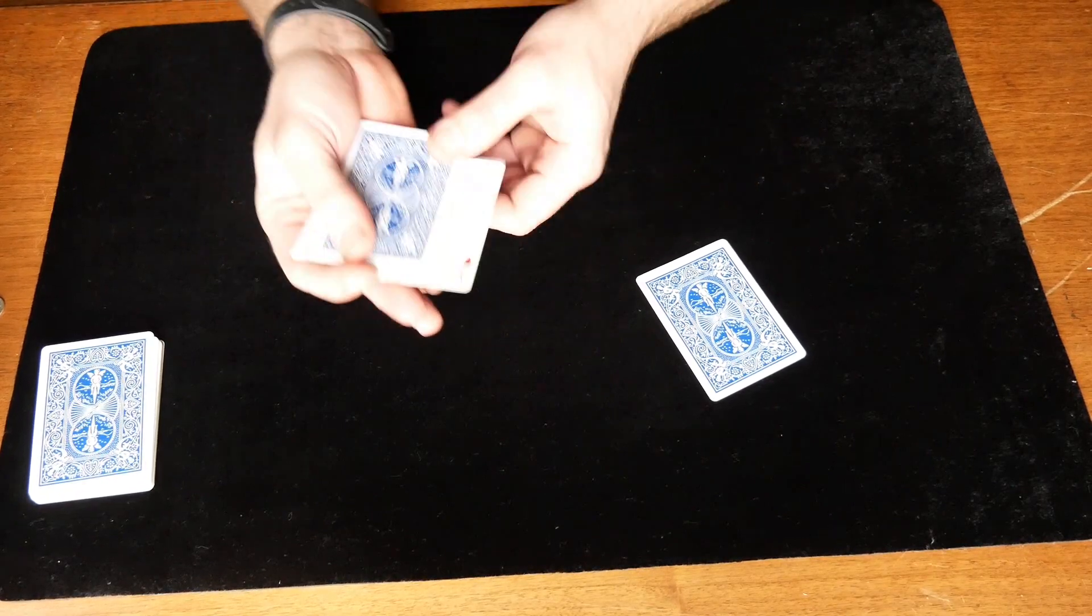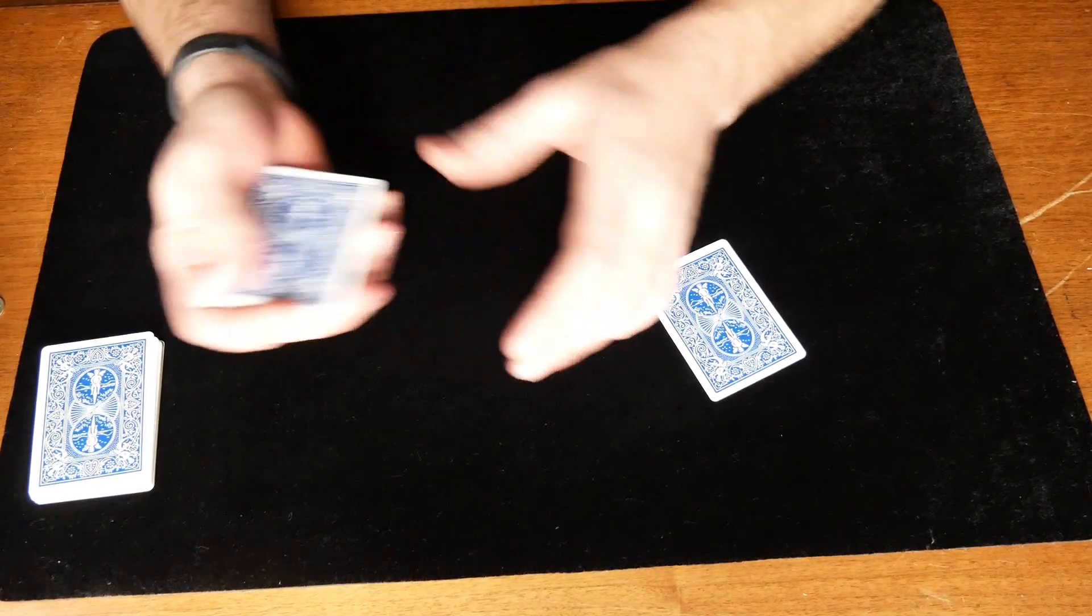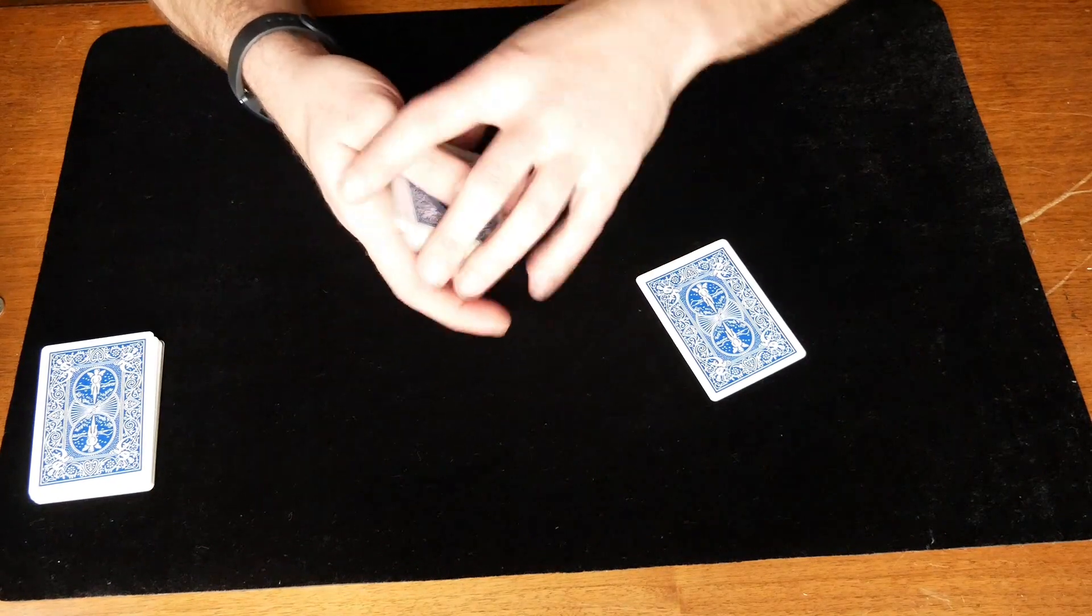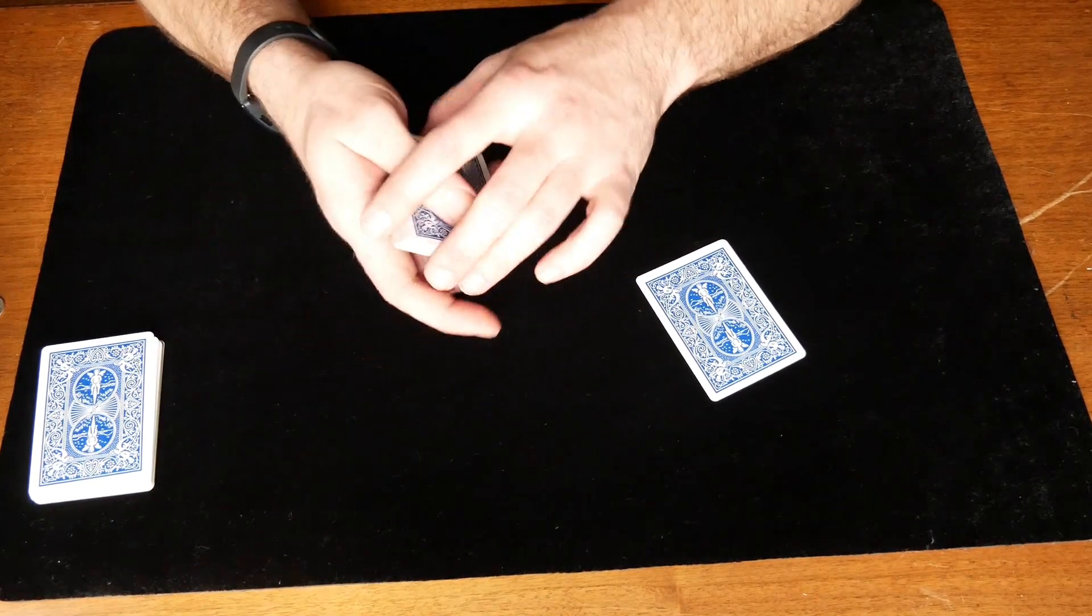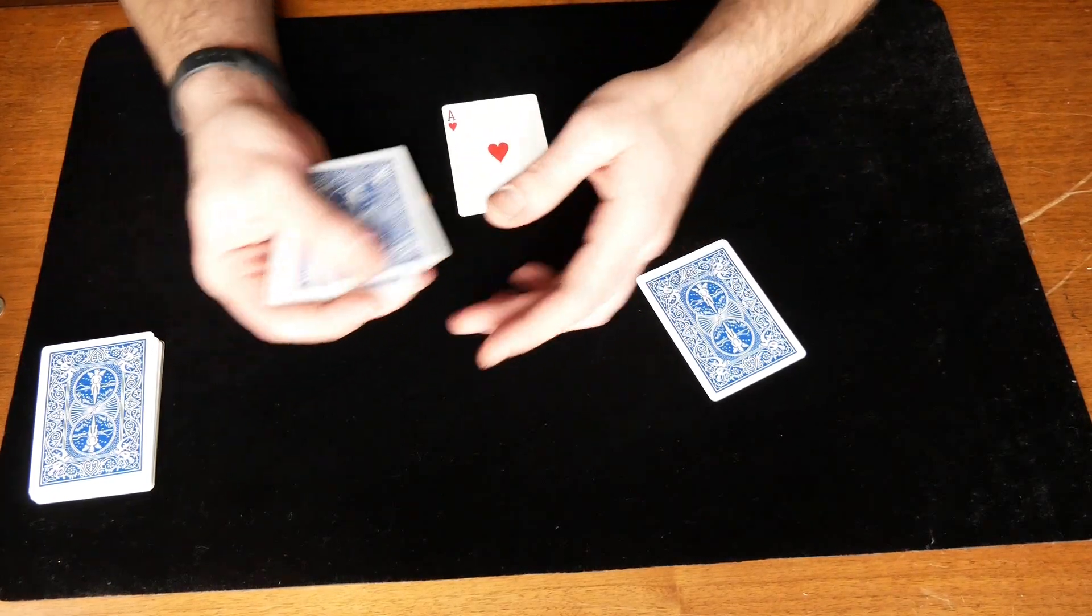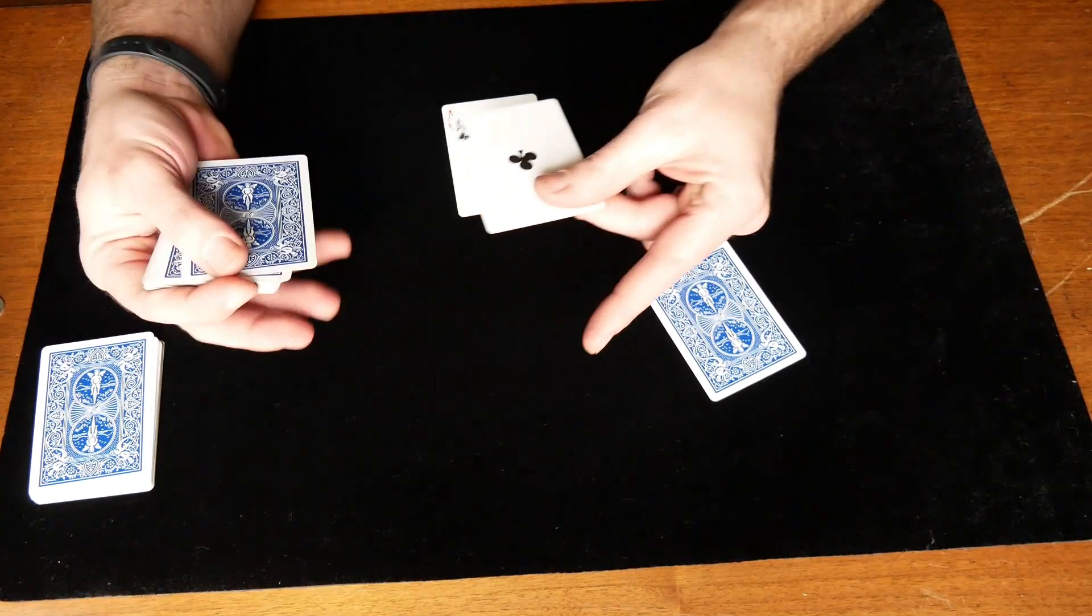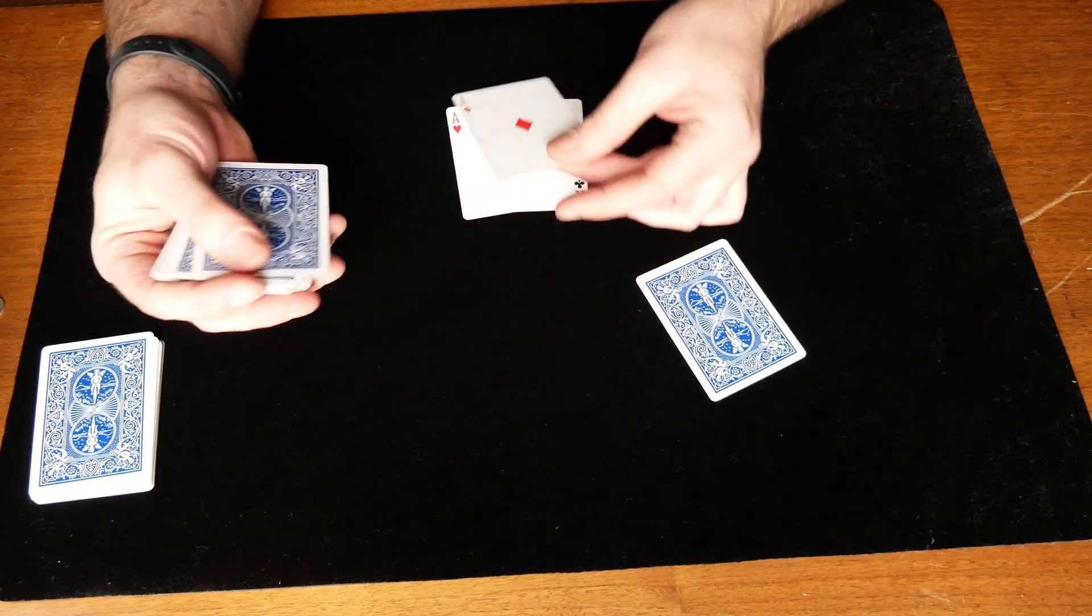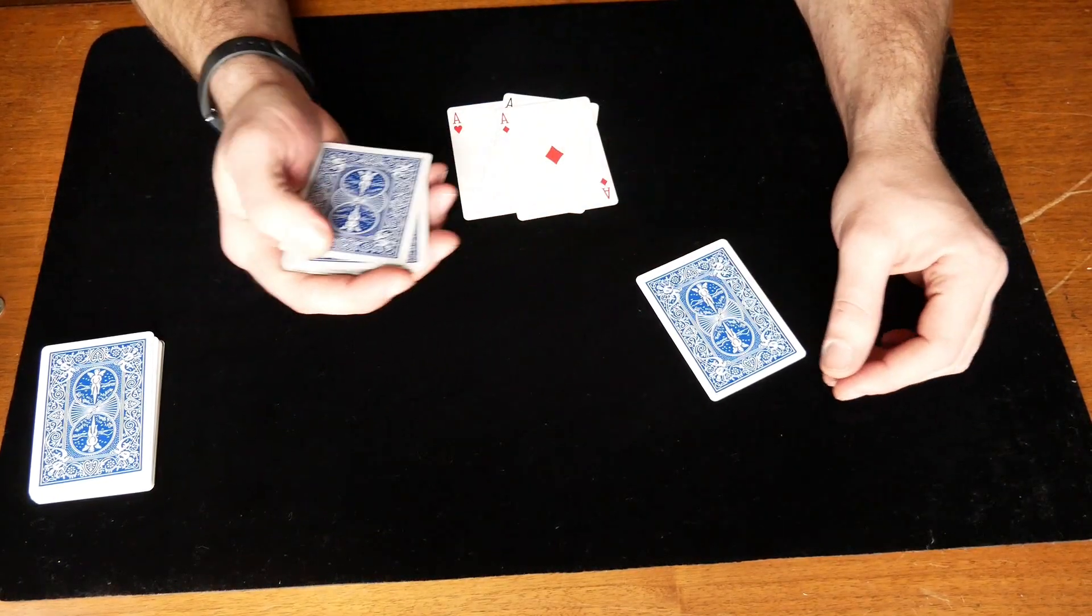I'm grabbing and sliding the bottom card out kind of like that. I don't know if you can see it, but I'm still pretending to slide a card over to deal, but I'm slipping the bottom card out from underneath with my ring finger here and then bringing the top card back.